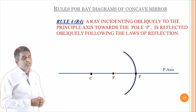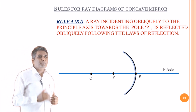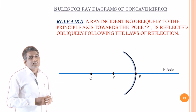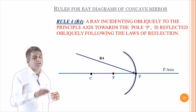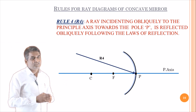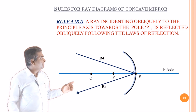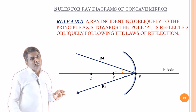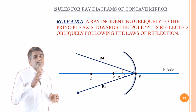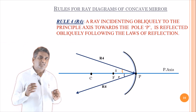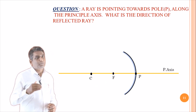Coming to the last rule R4: a ray incident obliquely through the principal axis towards the pole P is reflected obliquely following all the laws of reflection — that is, angle of incidence equals angle of reflection. These are the four important rules, and by using any two rules you can draw the ray diagram.